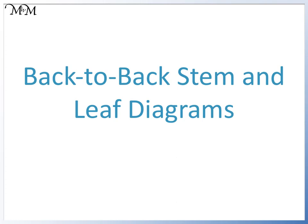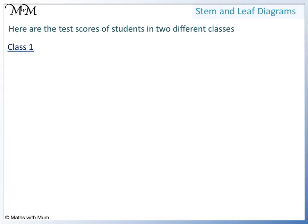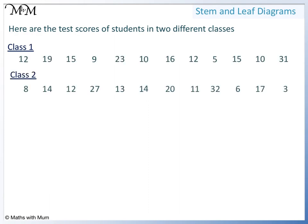Hi and welcome to our lesson on back-to-back stem and leaf plots. Here are the test scores of students in two different classes: class 1 and class 2. We start with a stem, and we will enter class 1 on one side and class 2 on the other.